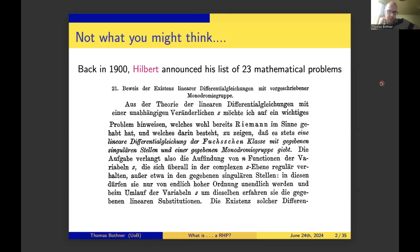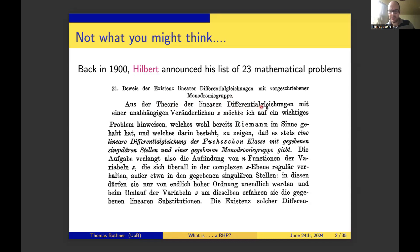Hilbert did a curious thing: he first published his problem list in German, not in the French proceedings of the Congress. This is copy-pasted from his German publication, so I will translate. Problem number 21 is about proof of the existence of linear differential equations with a prescribed monodromy group. The terminology of monodromy already appeared in the previous talk. Now Hilbert says that this is a problem in the theory of linear differential equations, and he claims that this is probably something Riemann already thought about. The problem consists in showing that there is always a linear differential equation of the Fuchsian class with prescribed singular points and prescribed monodromy group.